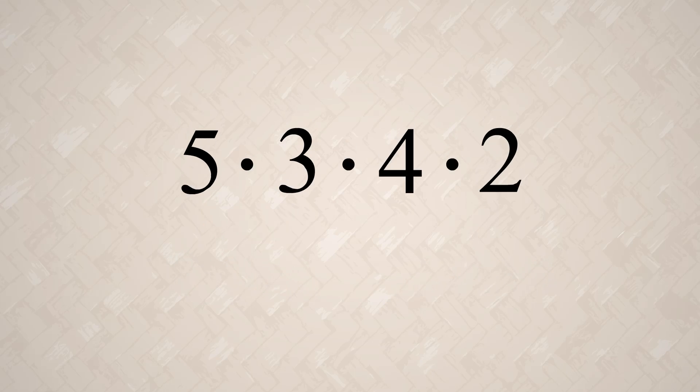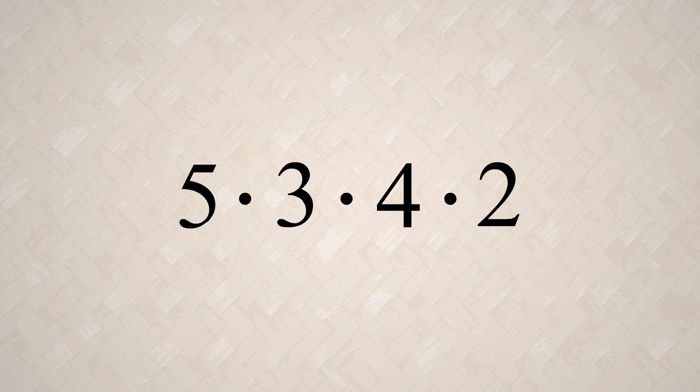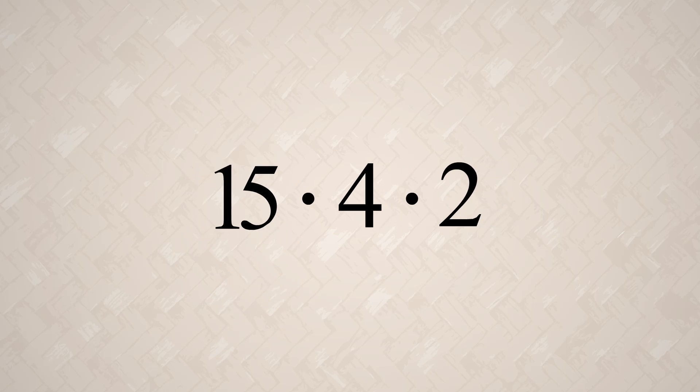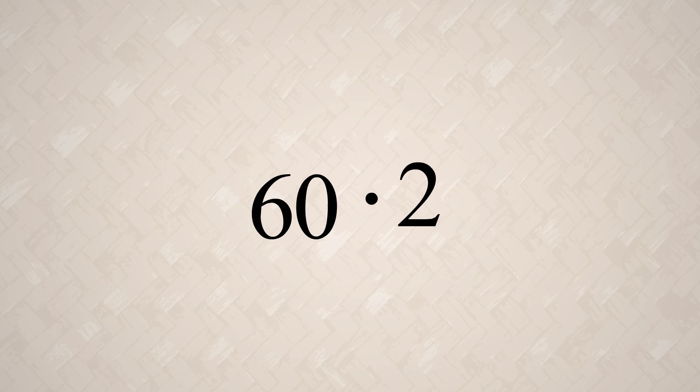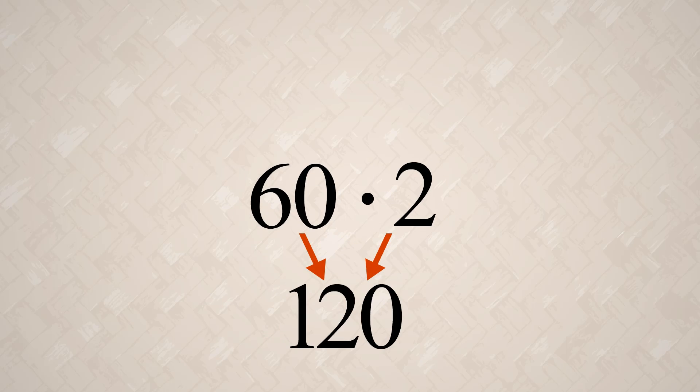Even though multiplication is defined as a binary operation, you may often see multiplications involving more than two operands. Just as in addition, this is possible because pairs of operands can be multiplied one at a time with each product replacing the pair. In this way, an unlimited number of operands can be multiplied sequentially.